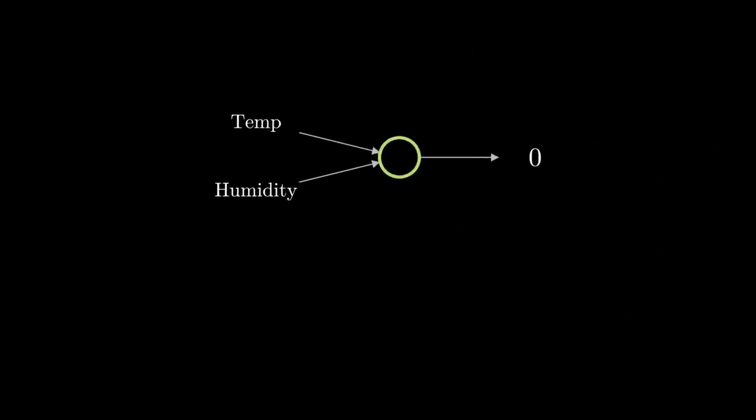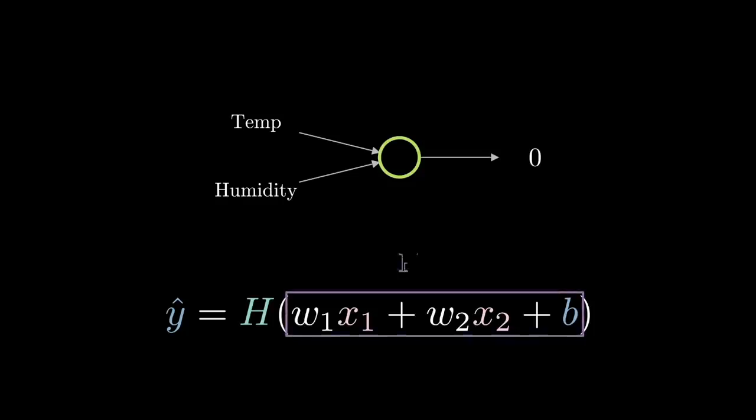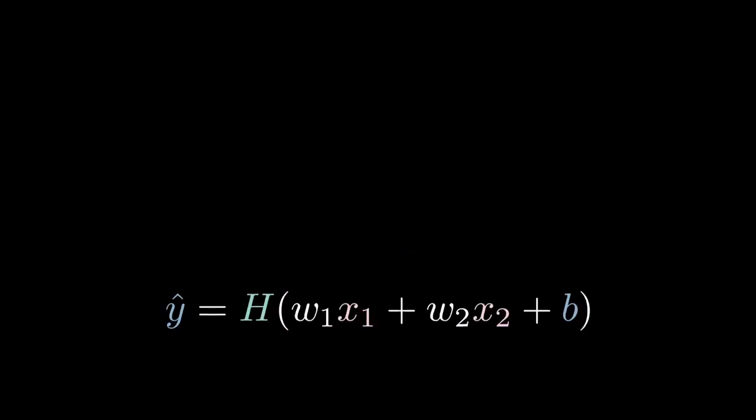Mathematically, instead of heavyside of wx plus b, we now have two variables which I'll call x1 and x2. We can write this new model as heavyside of w1 x1 plus w2 x2 plus b, which is just the standard notation for a plane, and this becomes a line when the plane intersects the plane z equals 0. We'd like to generalize this even more.